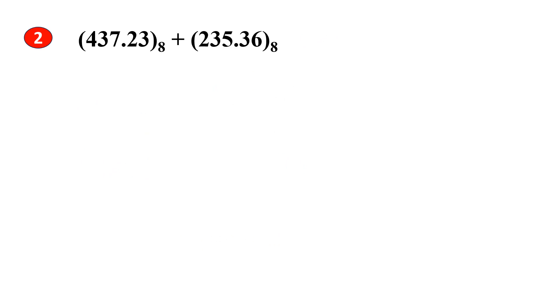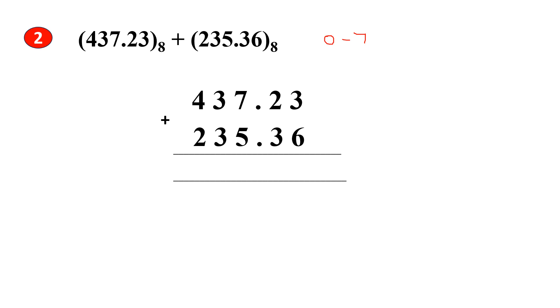Problem 2: as stated, octal numbers are numbers between 0 to 7. Let's start the addition from the fractional part. 3 plus 6 gives us 9. 9 is not an octal number, so divide by 8: quotient is 1 and remainder is 1. Put 1 as the sum and 1 as the carry. Next, 1 plus 2 plus 3 gives us 6, and 6 lies between 0 to 7 so it's an octal number.